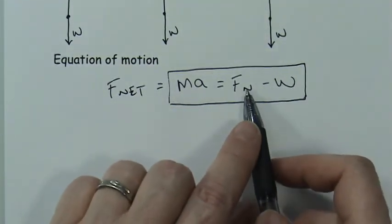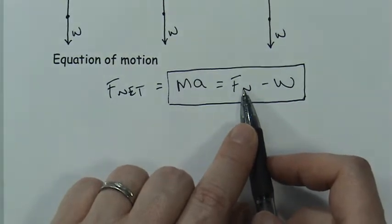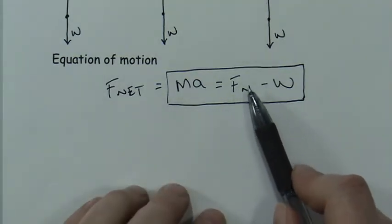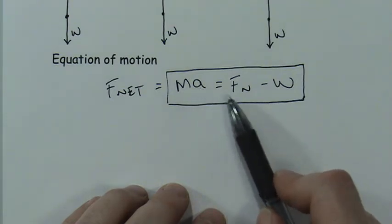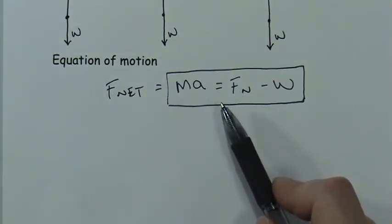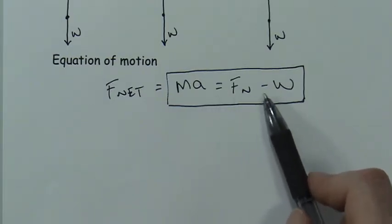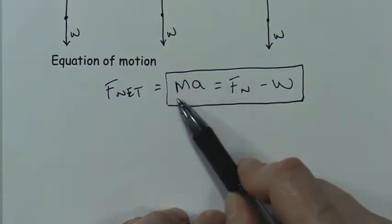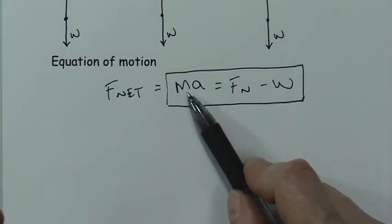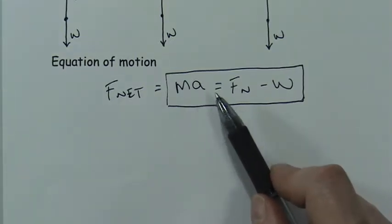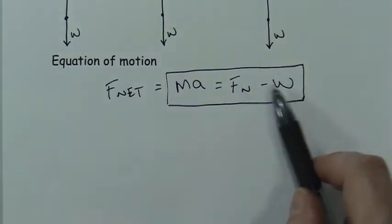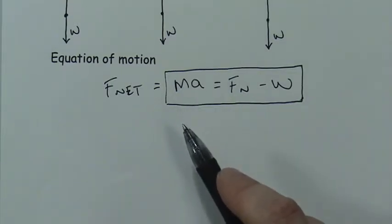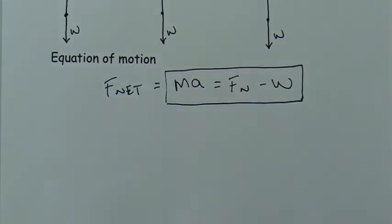If there's a scale in the elevator, reading it would tell us the acceleration based on whether the number is bigger or smaller than 500 N. If the normal force is bigger than the weight, acceleration is positive and you feel heavier. If the elevator accelerates downward, the normal force is less than the weight, giving a negative result. When the two are balanced there is no net force, so acceleration is zero. When F_N is bigger we get positive acceleration; when F_N is smaller we get negative acceleration.